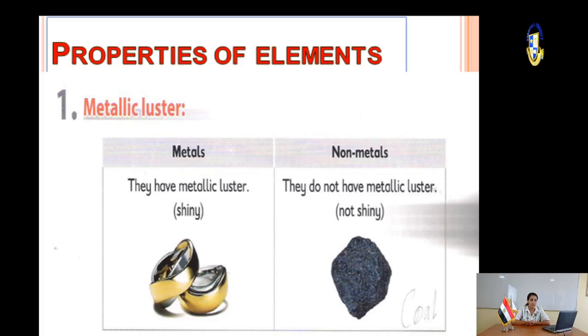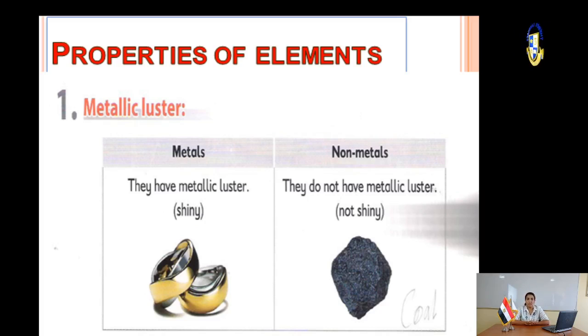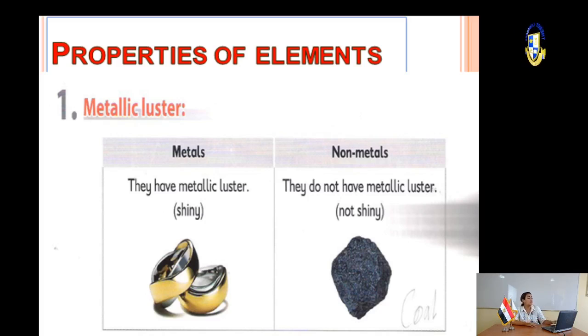Properties of elements. First, metallic luster: what is meant by metallic luster? It means shiny. Metals are shiny, while non-metals do not shine.